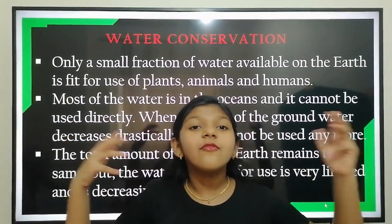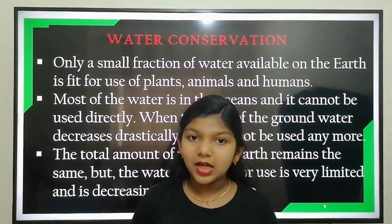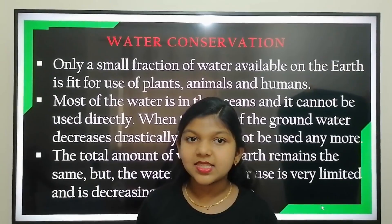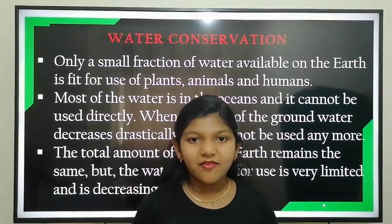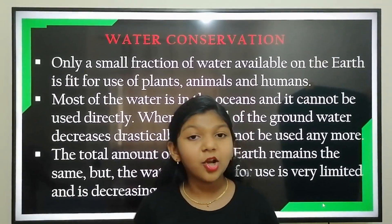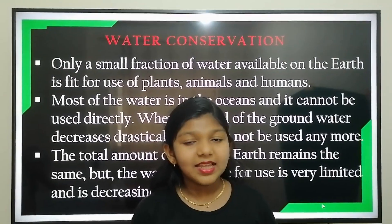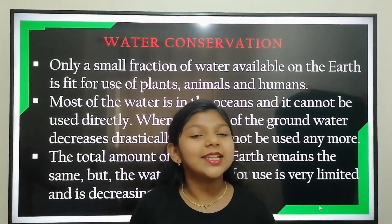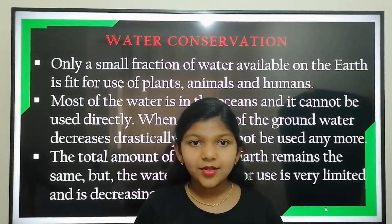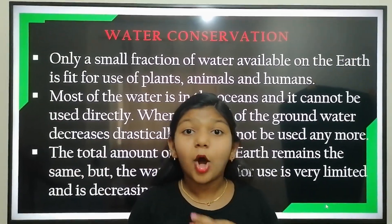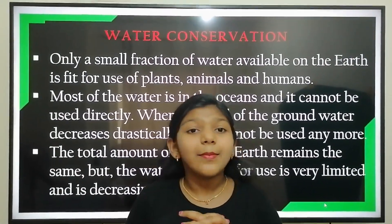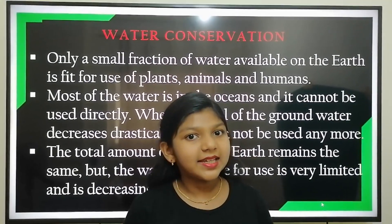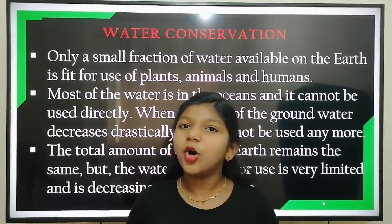Only a small fraction of water available on the earth is fit to use for plants, animals and humans. Most of the water is available in the ocean and it cannot be used directly. When the level of groundwater decreases drastically, it cannot be used anymore. The total amount of water on earth remains the same, but the water available for our use is very limited and is decreasing with over usage.